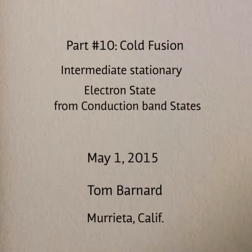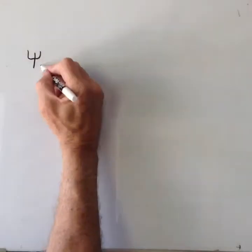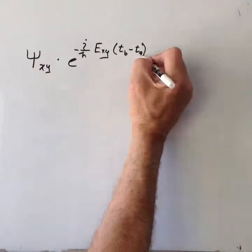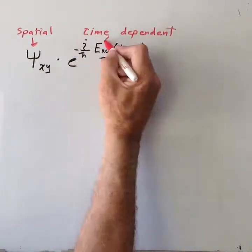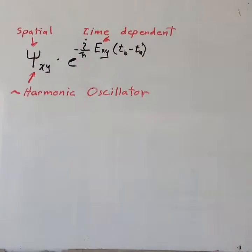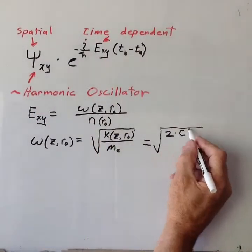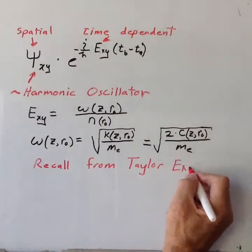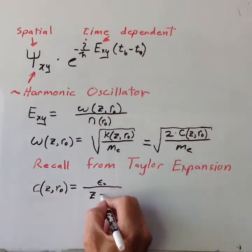In our last video, we outlined the derivation of the electron wave function orthogonal to the z-axis aligned with the two deuterons. We described a set of spatial harmonic oscillator states along with the time-dependent wave functions. We showed how to calculate this spatial wave function from the force constant of the parabolic potential felt by the electron.